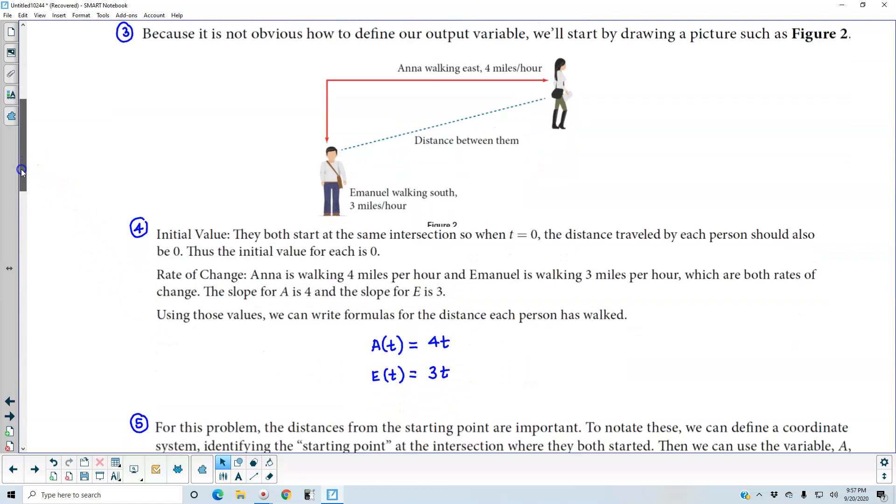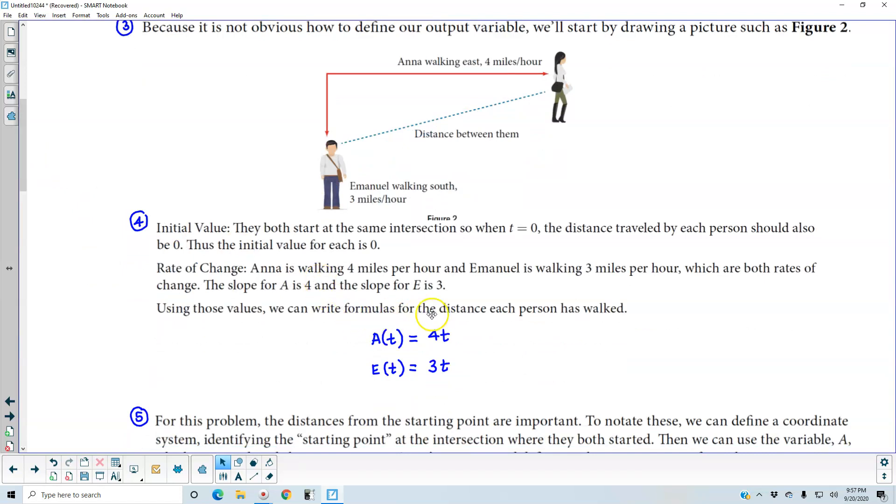So using those values, we can write formulas for the distance each person has walked. So A(t), or Anna, is equal to 4 times t, and Emanuel is going to be E(t), which is equal to 3t.